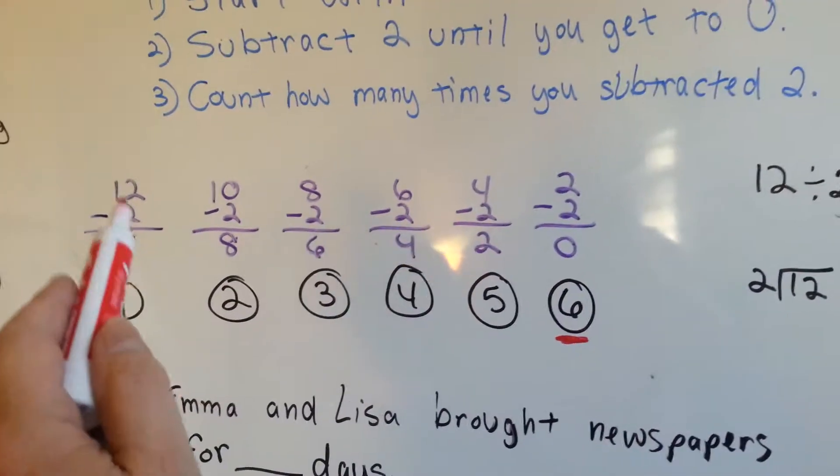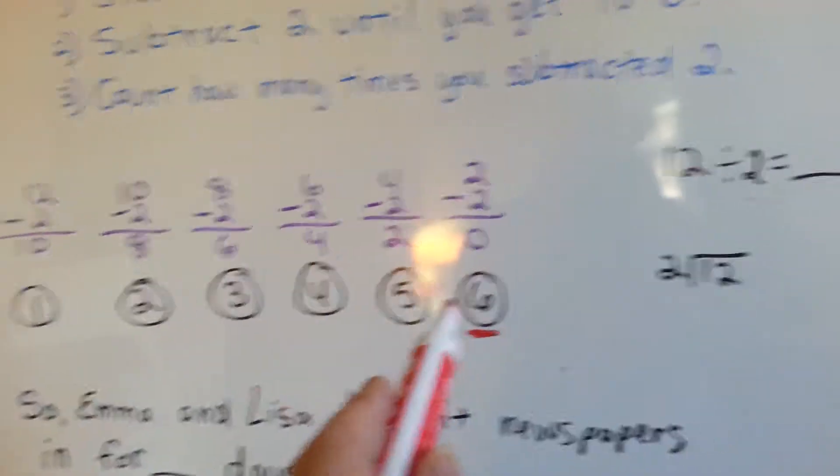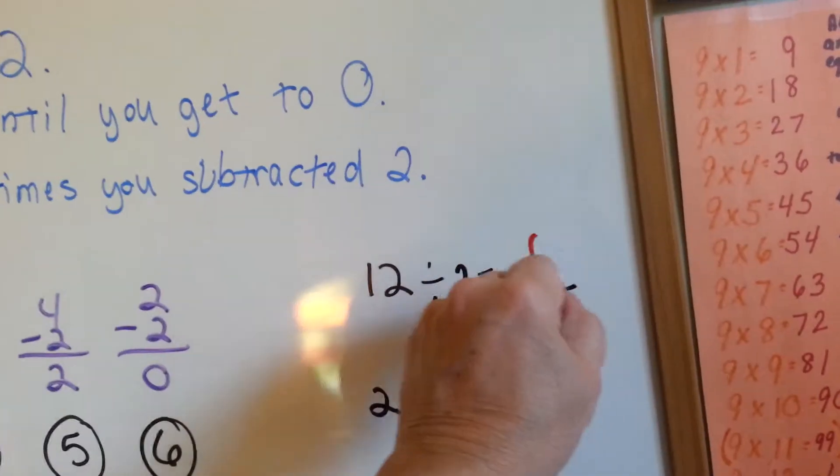Because it took us one, two, three, four, five, six times to subtract two to get there. So, we're saying twelve divided by two equals six.